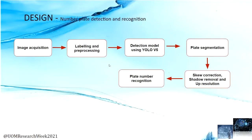This is our first module: number plate detection and recognition. Here is the design for that module. First, image acquisition is done, then images are labelled and preprocessed. They are then trained using the YOLO version 5 detection module. After that, the plate is segmented, and steps such as skew correction, shadow removal, and up-resolution are applied to the segmented plate image. Finally, the plate number is recognized with a timestamp.